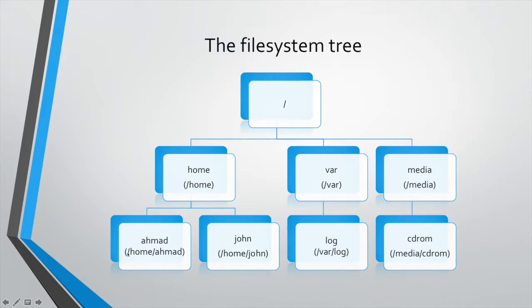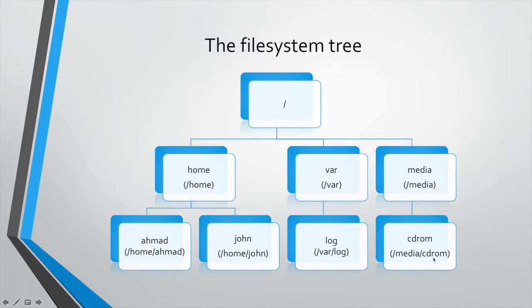This is called a path — '/home/ahmad', '/home/john', '/var/log', or '/media/cdrom'. CD-ROMs and DVD-ROMs have their own file systems that must be mounted onto a directory in order to be used. When mounting a file system to a directory, you tell the system that you want this directory to be your path into that file system. So '/media/cdrom' is your way to enter the CD-ROM file system and see the files and folders for the CD inserted into the system.